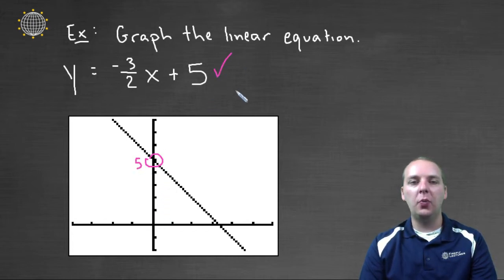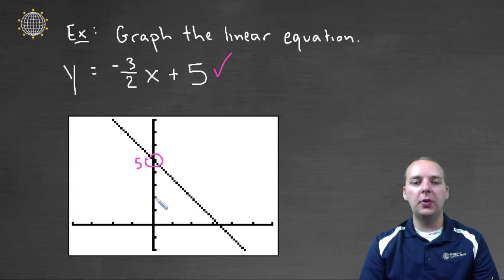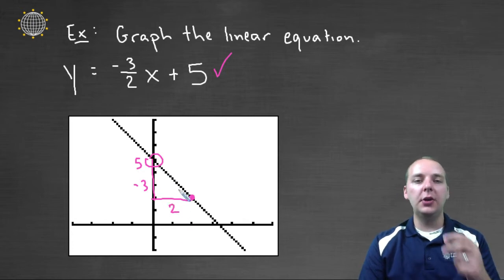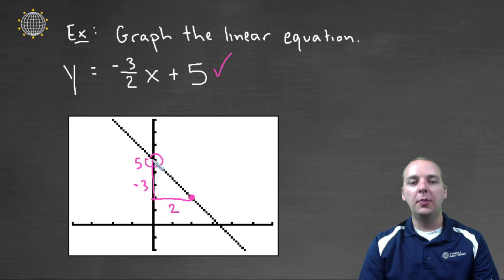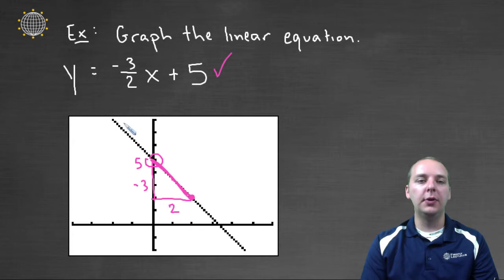So five was our y-intercept. And then from one point to another, you can go down one, two, three units while going right one, two units. And sure enough, the ratio of the rise to the run would be down three as you move to the right two. And just that ratio has to be maintained. Like, you could go down six if you went to the right four, for example. But the ratio of the rise to the run would be a ratio of negative three to two.